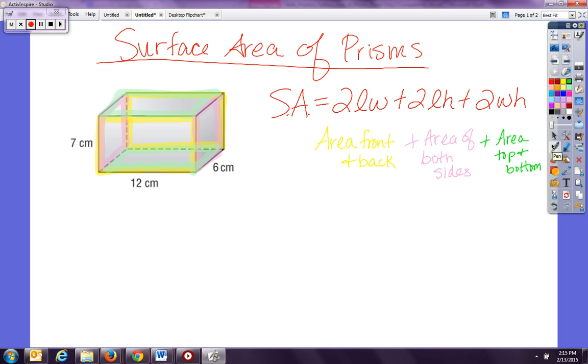All right, so we can do that just by labeling our length, width, and height. Let's go through here and let's just go ahead and give 7 our length, 12 our width, and 6 our height. So now I can just go and plug it in. My length and width—area front and back—so that would be two times seven times twelve, and I'm multiplying it by two because there's two of them, front and back.